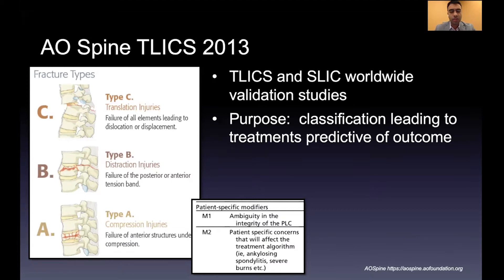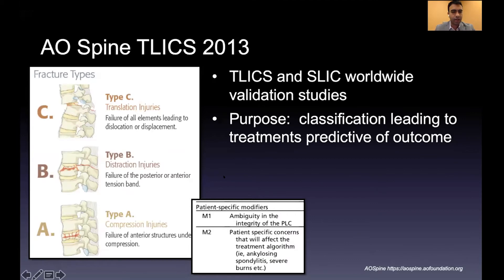The 48 to 72 hour window gives a better idea of the patient's true ASIA scale. This is more of a clinical decision rule — whether to conservatively manage a patient with, say, a Type A2 fracture versus someone who needs to go to the OR right away. AO Spine and TLICS should be done at the time of the scan.